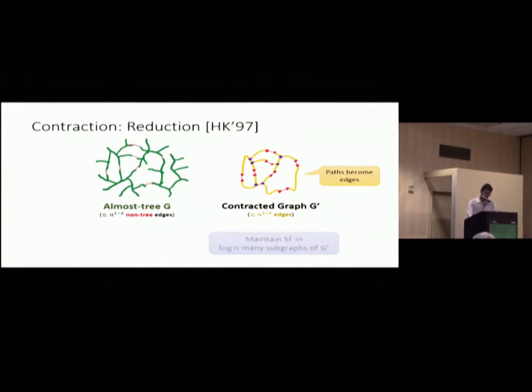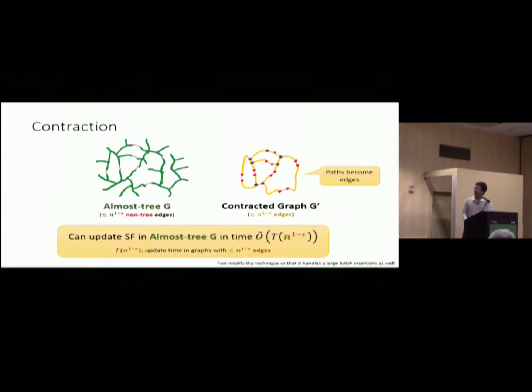And once you realize this, you just use the old reduction. Which says that if you can maintain a spanning forest in log n subgraphs of this contracted graph G prime, then you can recover the spanning forest in this original graph. And once we have that, we can just conclude that, okay. We can maintain spanning forest in the almost tree in time log n times the time that you need on the small graph. Okay. So, and by induction, we assume that we have a fast algorithm on the small graph. And so this gives a really fast algorithm on almost tree.